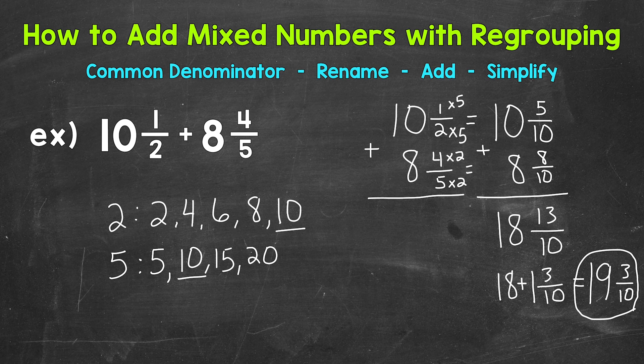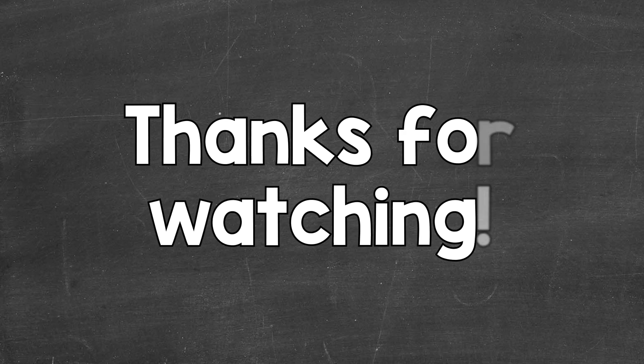And just to recap here, we had an improper fraction when we added our fractional parts of the mixed numbers. So we converted that to a mixed number and regrouped the whole number with our 18. So that gave us a total of 19 wholes. And then we had a fractional part of 3 tenths left over, giving us a final answer of 19 and 3 tenths. So there you have it. There's how you add mixed numbers with regrouping. I hope that helped. Thanks so much for watching. Until next time, peace.